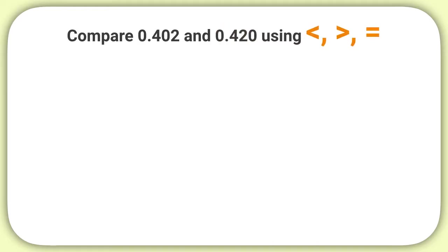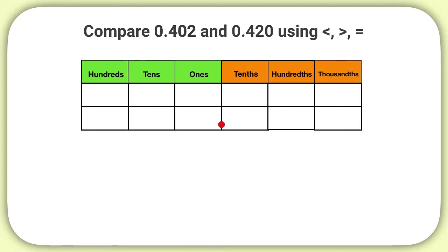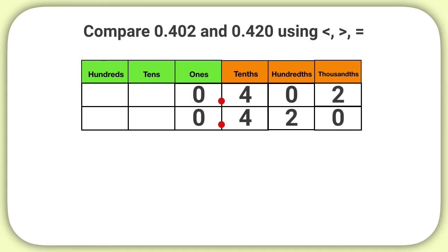Let's say we are asked to compare 402 thousandths and 420 thousandths. The first thing I can do is set up or imagine a place value chart. Then I place each digit of the first number onto the place value chart, and do the same with the second number, placing it below the first. I can make sure the numbers are lined up properly by checking that the decimals are lined up.